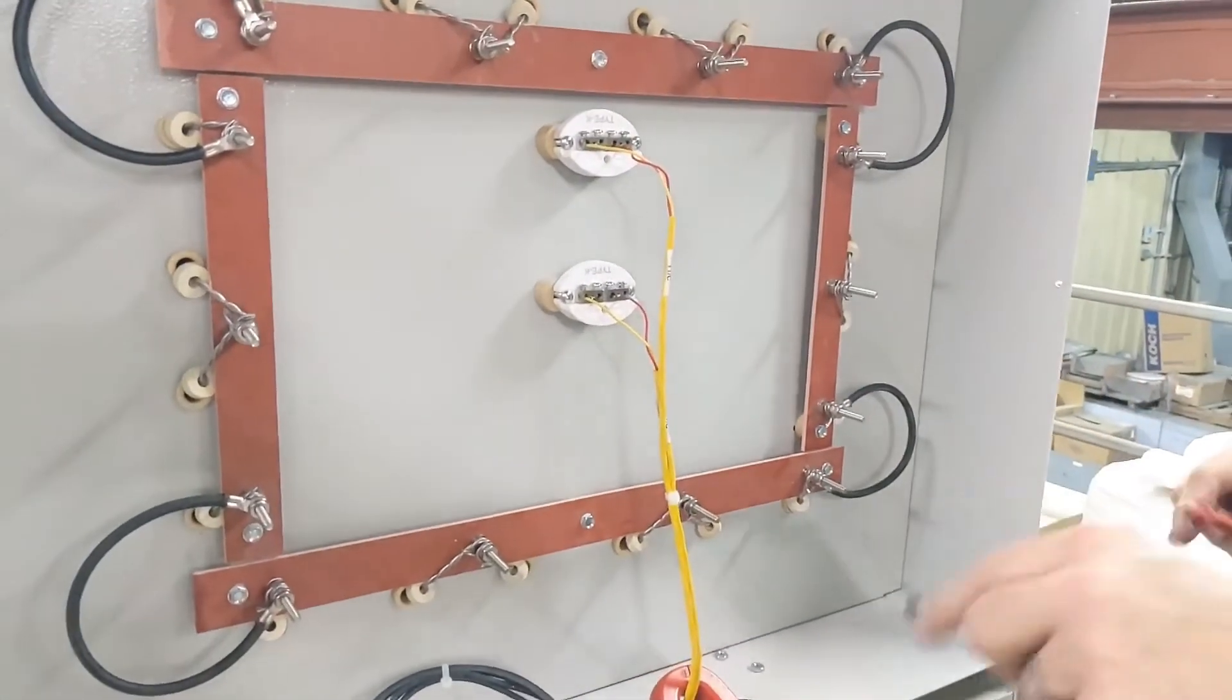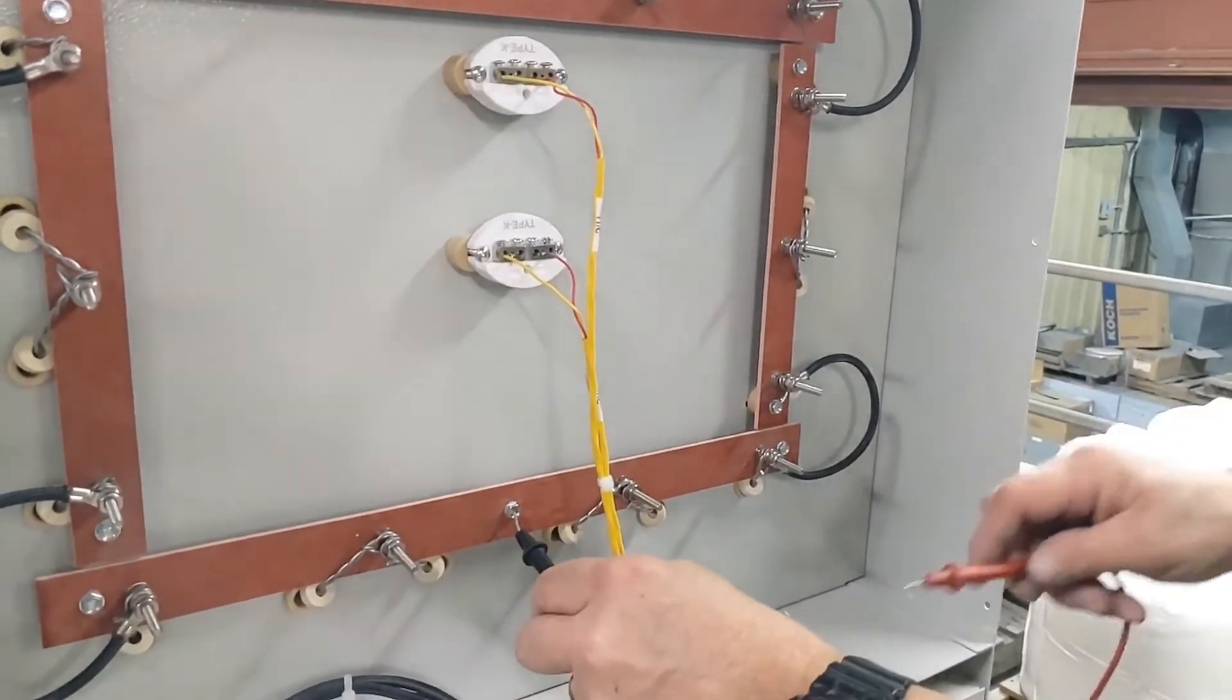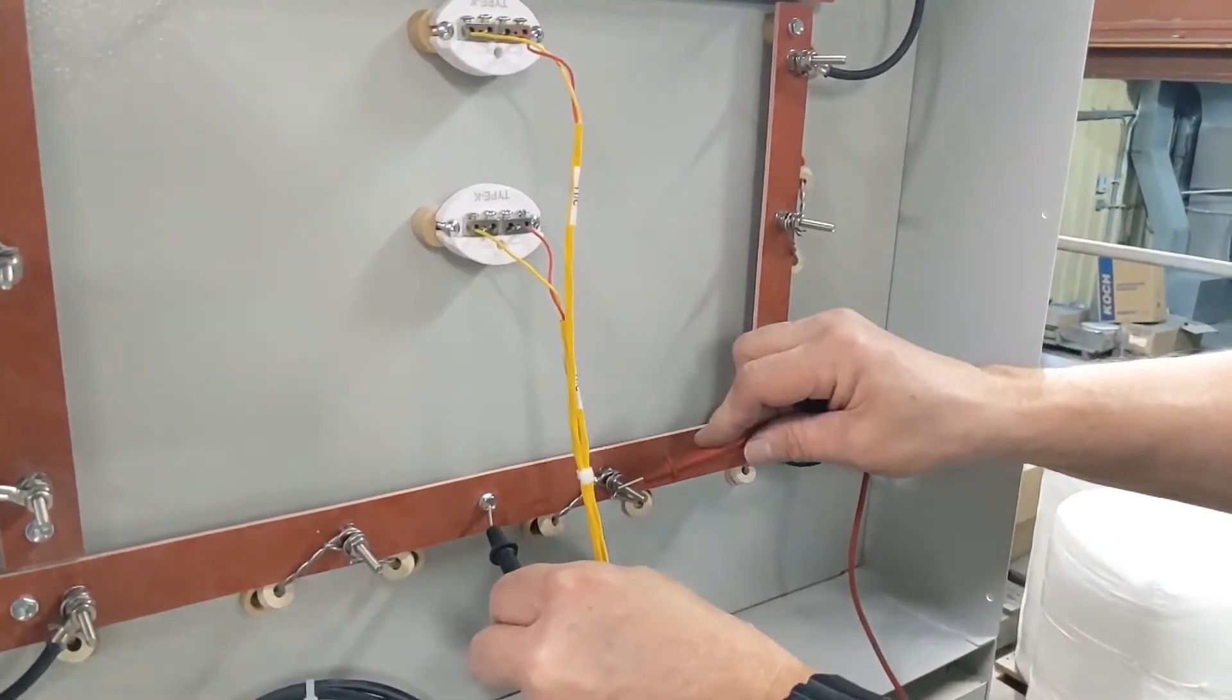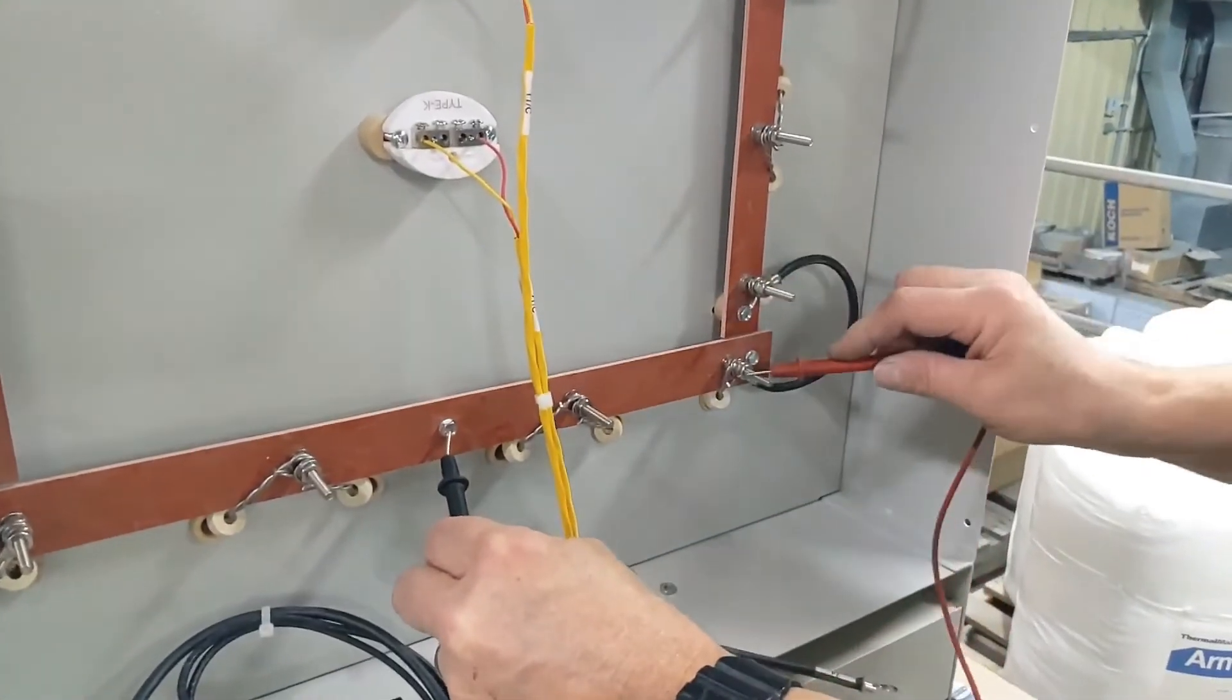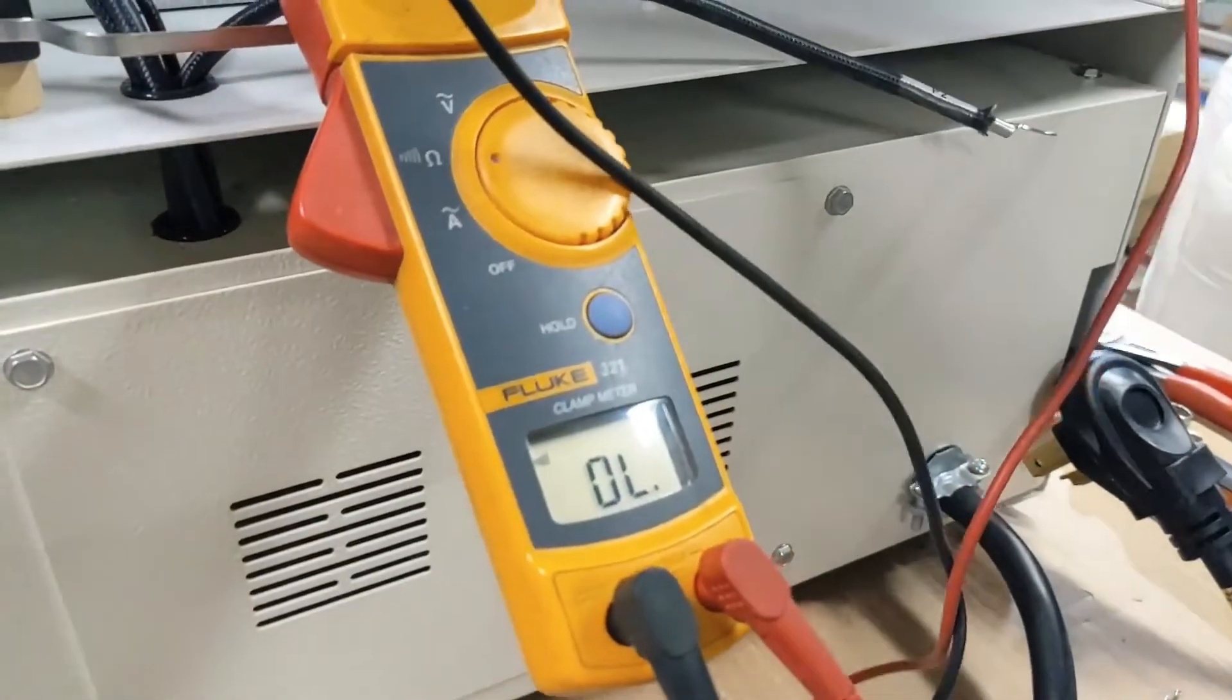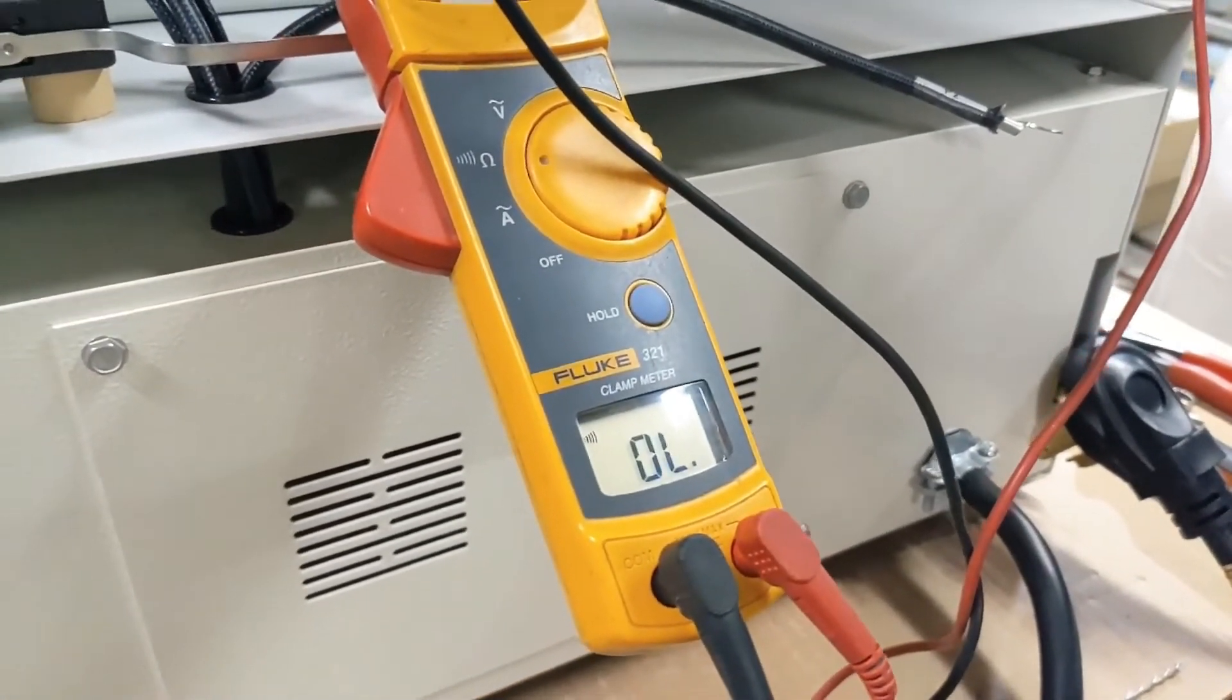The next step is to check resistance to ground to make sure no element is touching the metal case. We want to go from the element terminal to the mounting bolt for one of the terminal boards. And these should be an open loop.